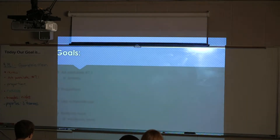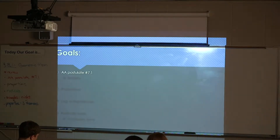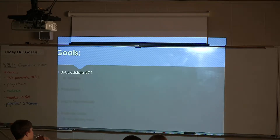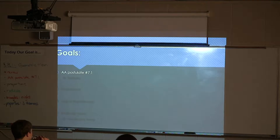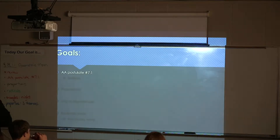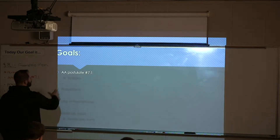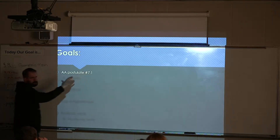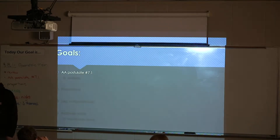Alright, 8-1, here we go. We're going to talk about the AA postulate — that was the postulate that the sub, whoever he or she was, put on the board yesterday. We need to make sure we cover that. That postulate is weird because it's actually found in chapter 7. I know that's one of the chapters we skipped, but there's one thing we actually needed.